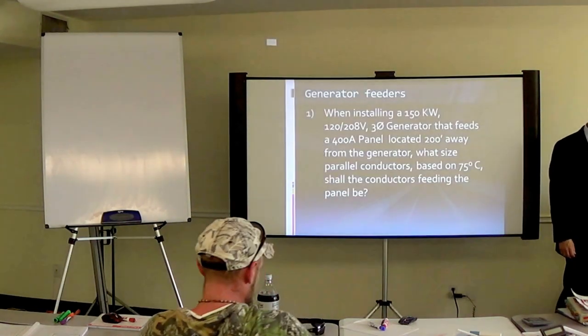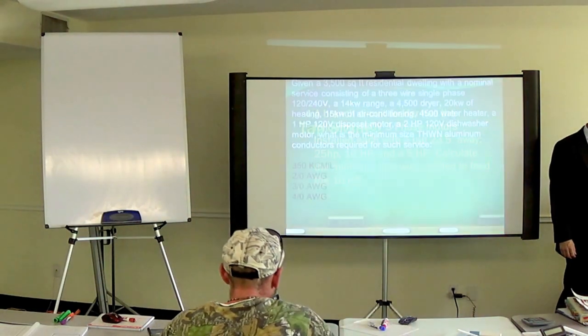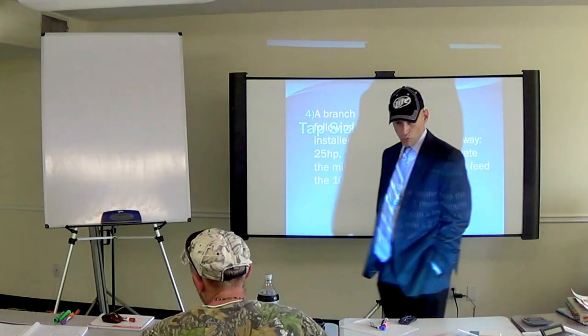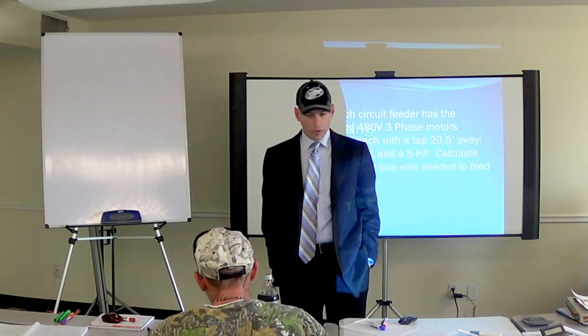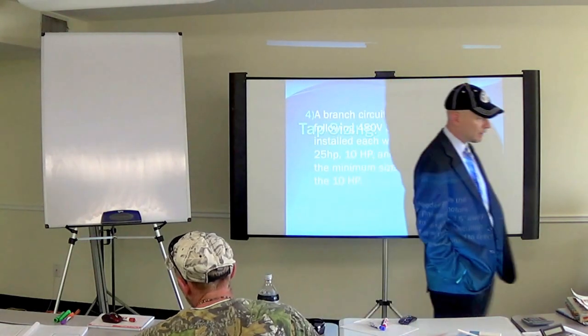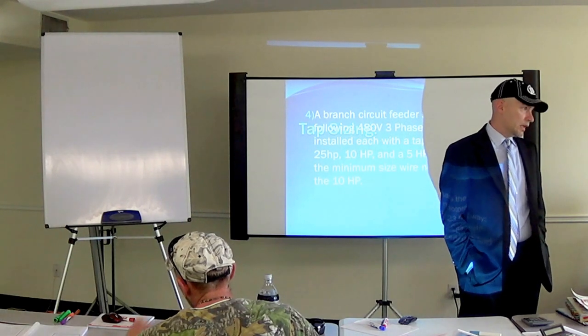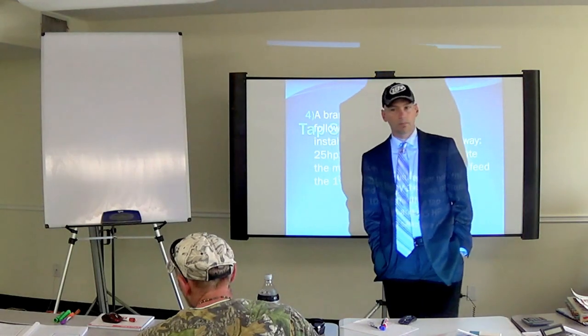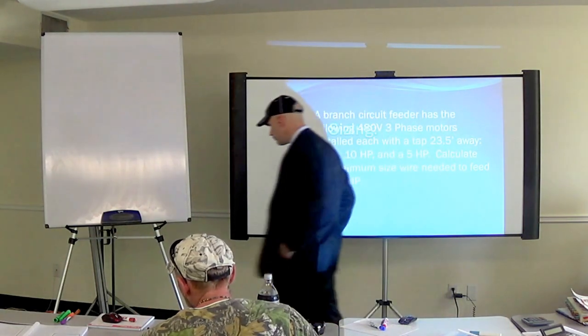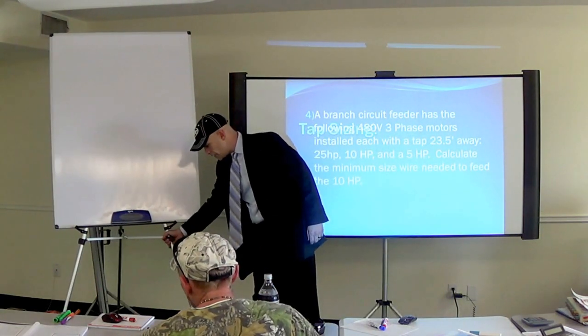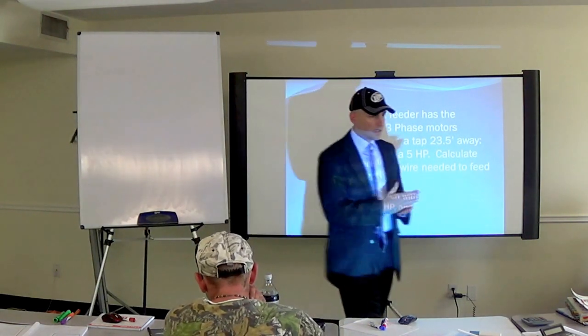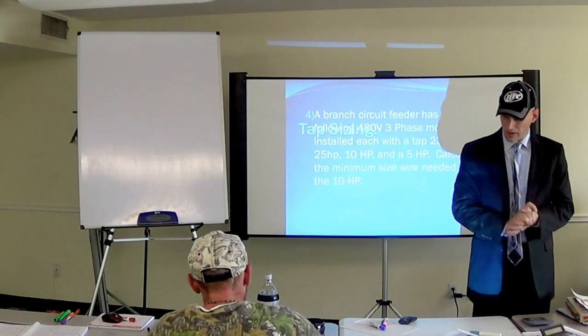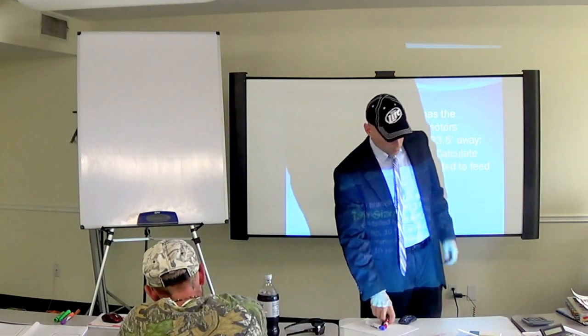So we're going to start with 220.82. And we're also going to go back and do the neutral degrading do it real quick. So we can kind of talk about that later and get that up a little deeper. 220.82 is the beginning of the optional method. And it's on page 67, which is where it starts.